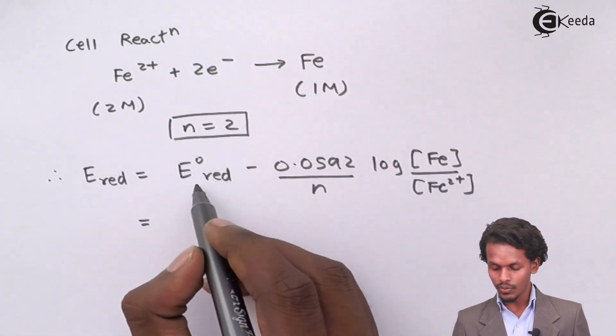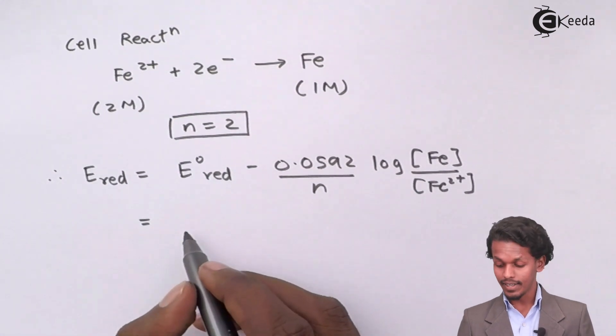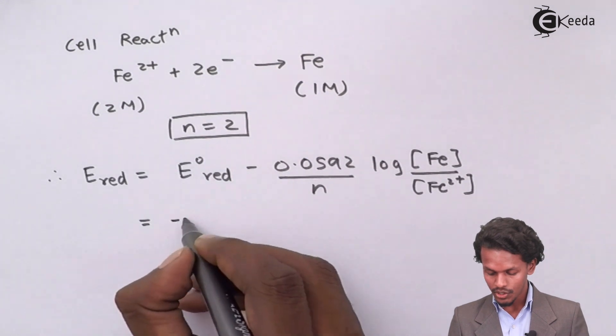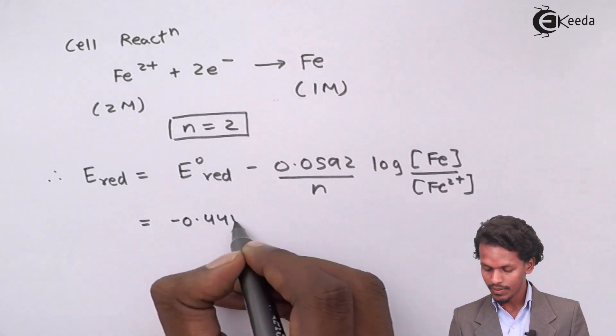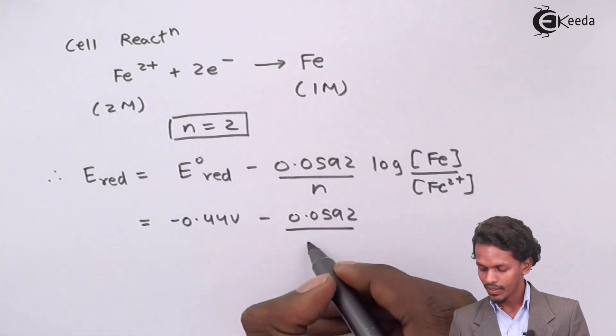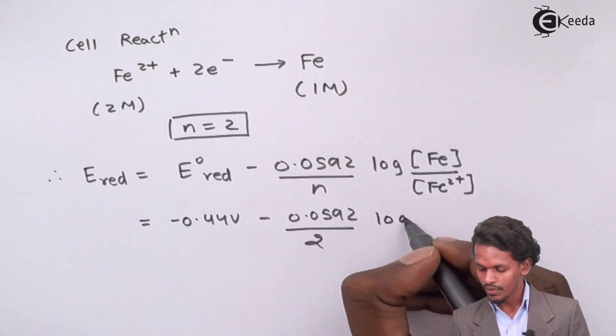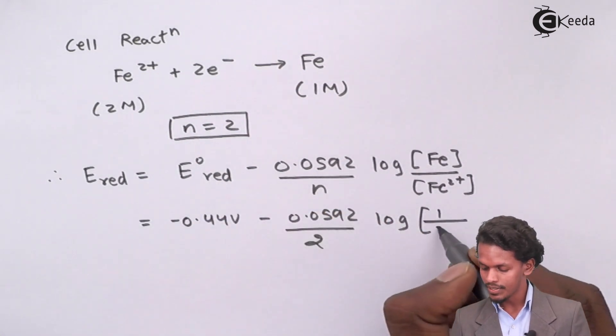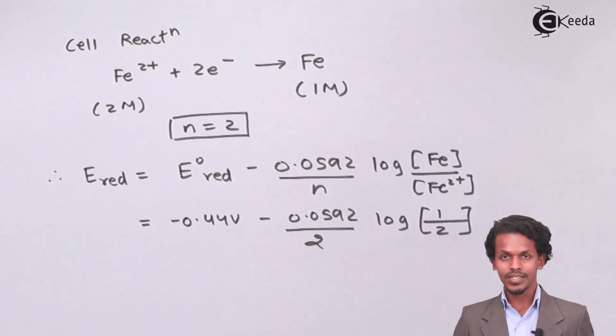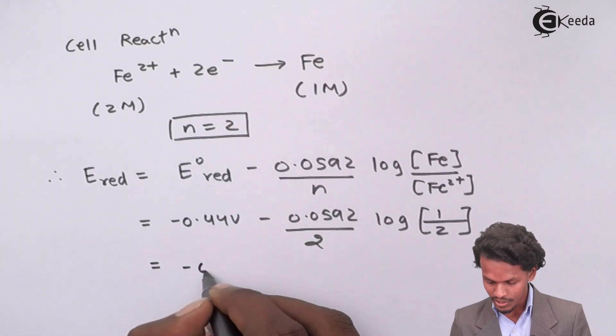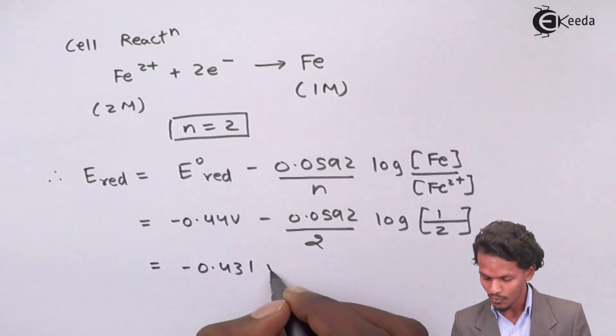The E0 reduction value is minus 0.44 volt minus 0.0592 divided by 2 log of concentration of 1 divided by Fe2+ value of 2. The answer that we have got is minus 0.431 volt.